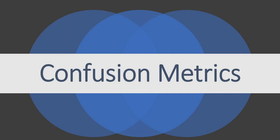Hi everyone, welcome to the series of videos on confusion matrix and its acronyms. The confusion matrix is one of the most simple and easiest metrics used for finding the correctness and accuracy of the classification model.